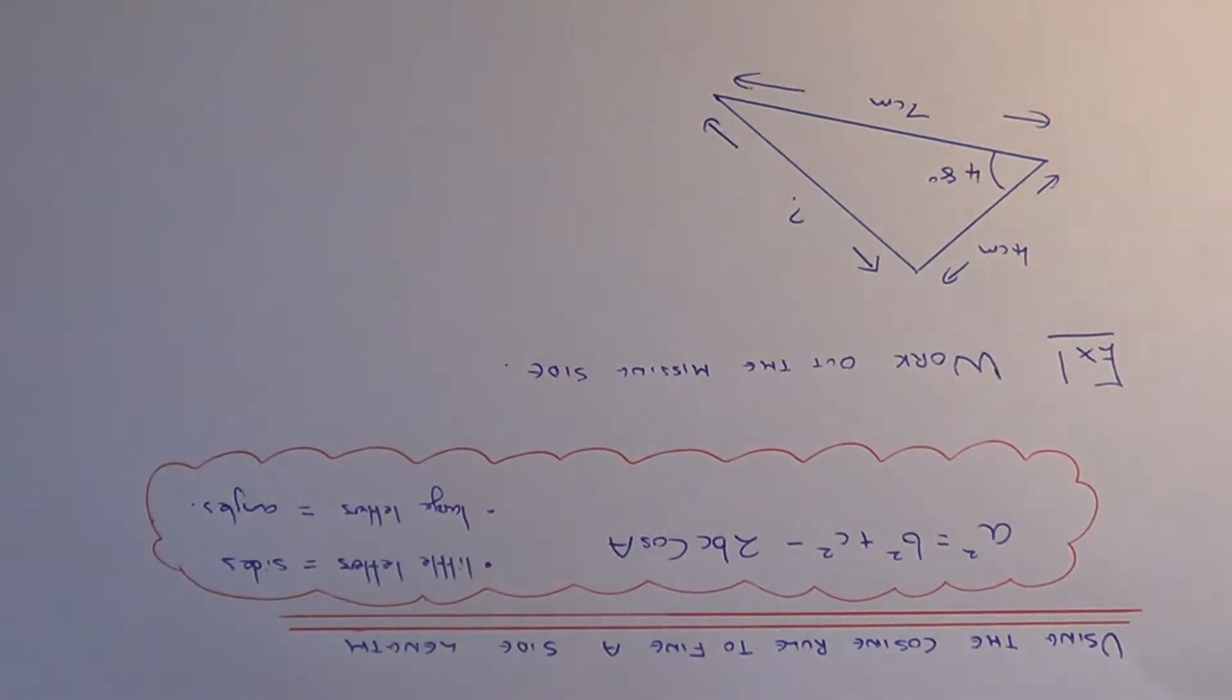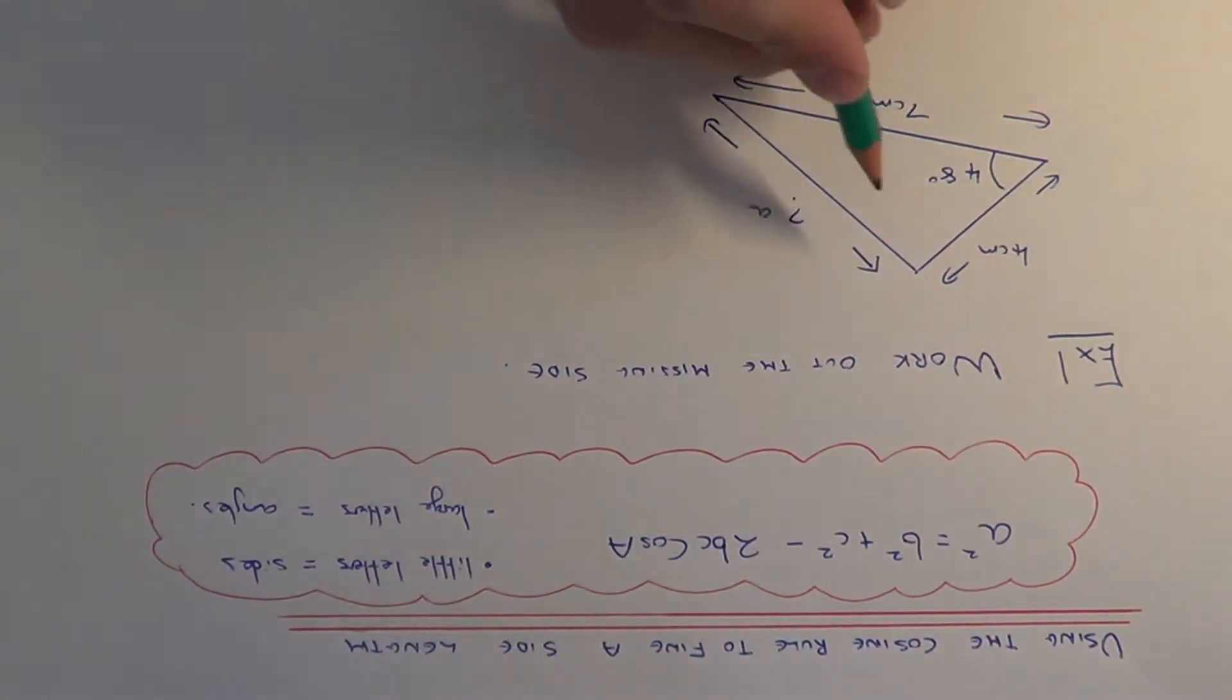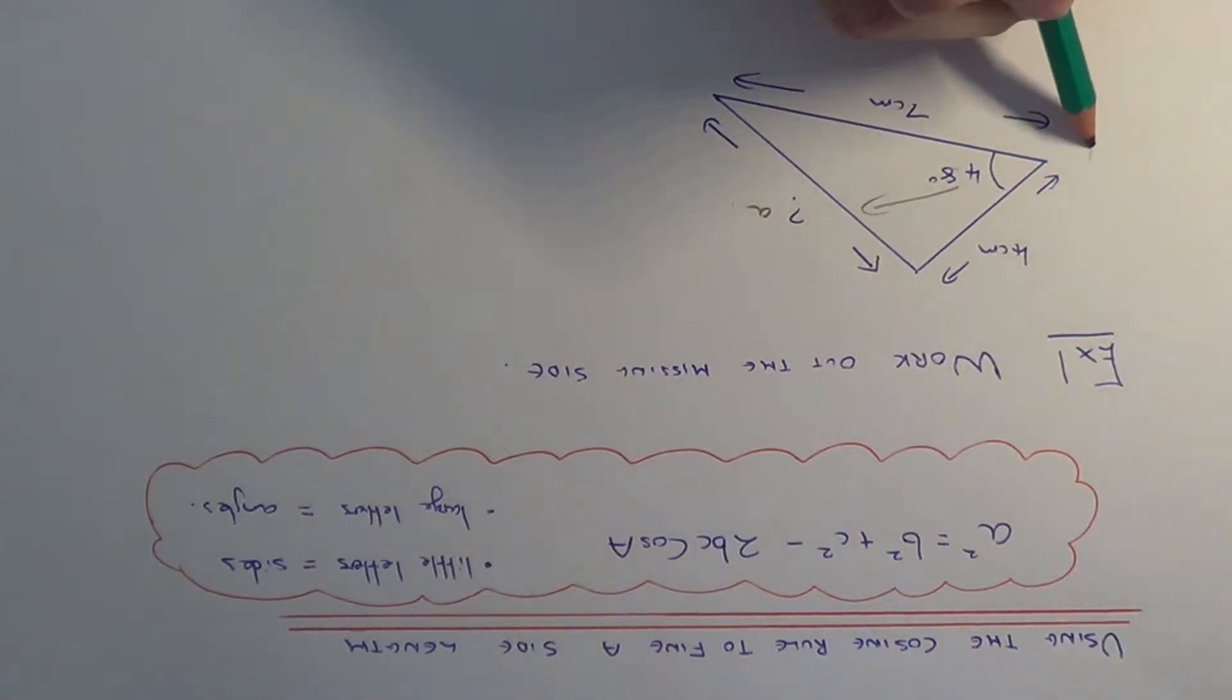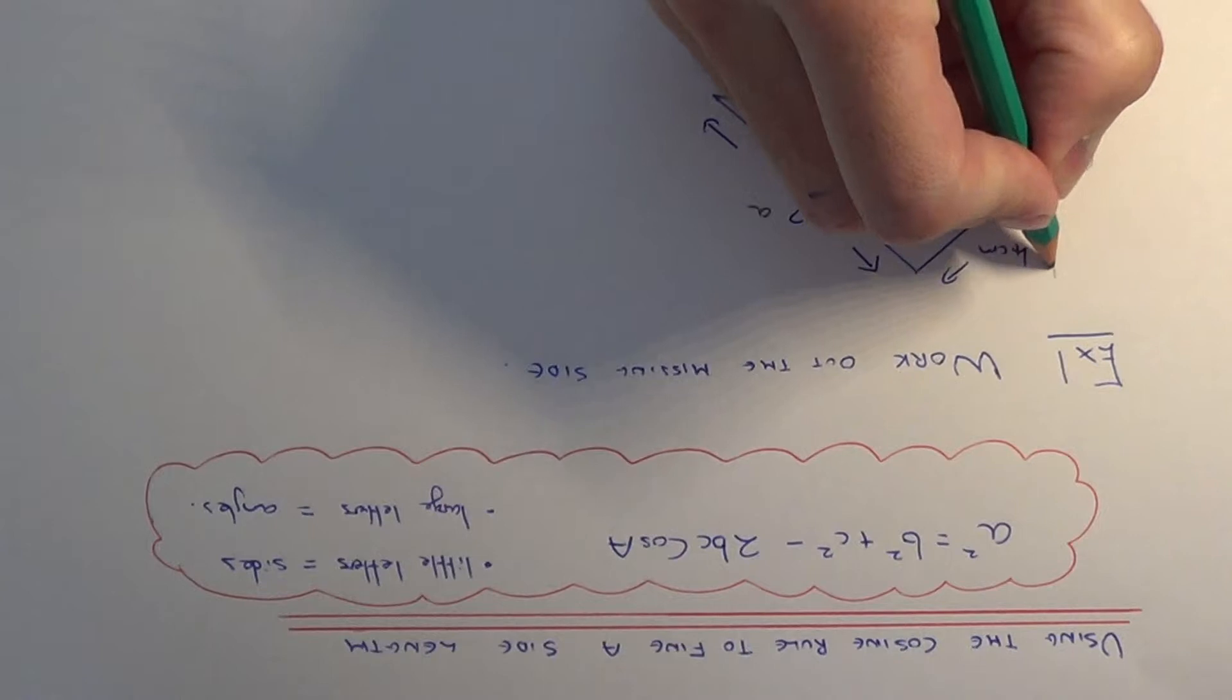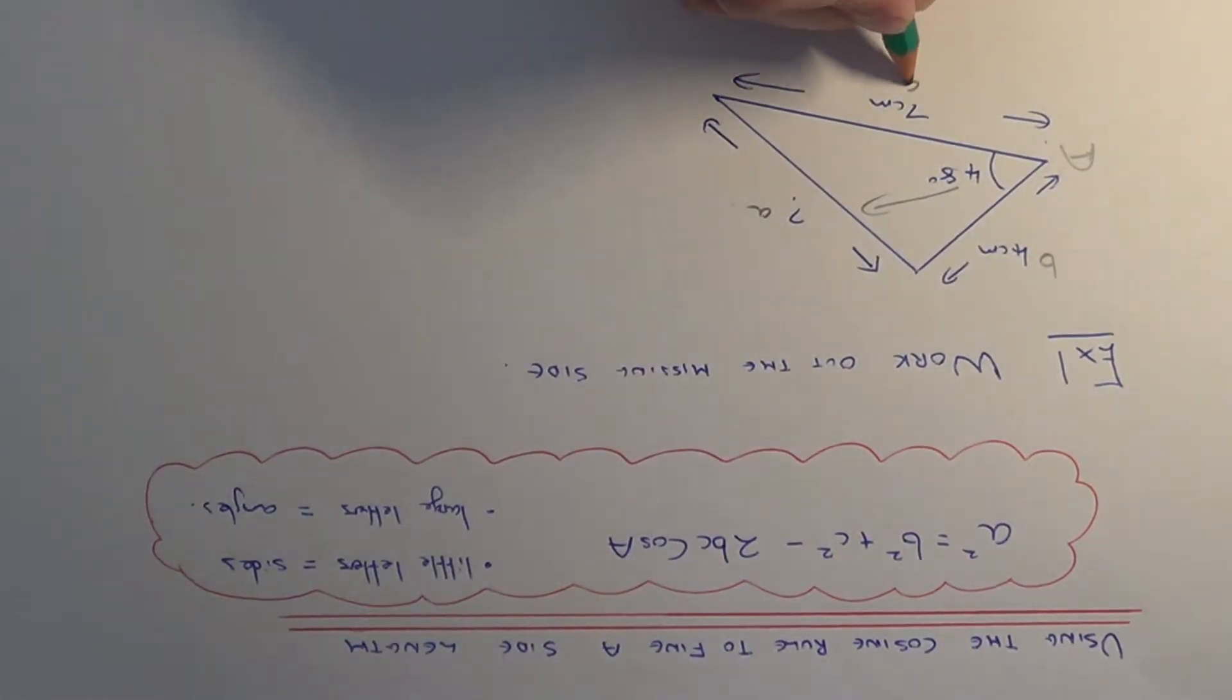The first thing you have to do is label up your triangle. The side that you're going to find, you're going to call little a. Since this side is opposite this angle, this angle would be capital A. Therefore the other two sides would be little b and little c. It doesn't really matter which order you label these in. Let's just call this one b and this one c.